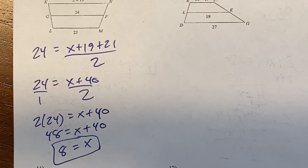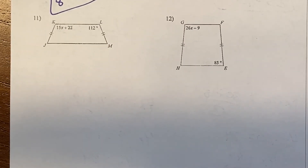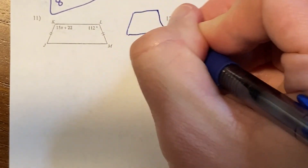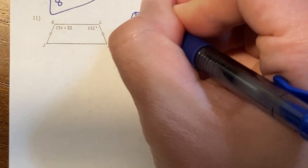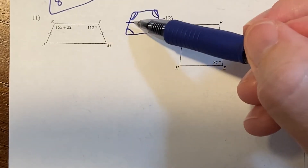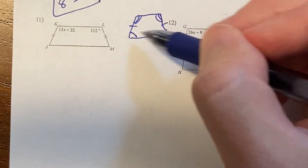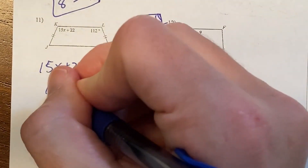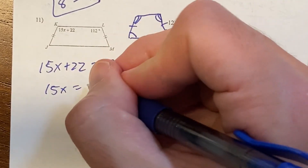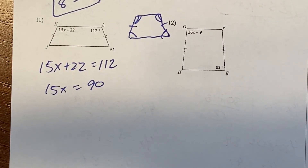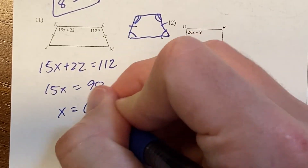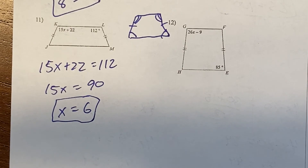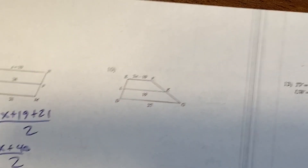Number 11 is an isosceles trapezoid. In an isosceles trapezoid, base angles are congruent — the two bottom angles are equal, the two top angles are equal. Angles on the same base are congruent; angles on opposite bases are supplementary (add to 180). So: 15x plus 22 equals 112, subtract 22 to get 15x equals 90, divide by 15, x equals 6. Push pause and try numbers 10 and 12.